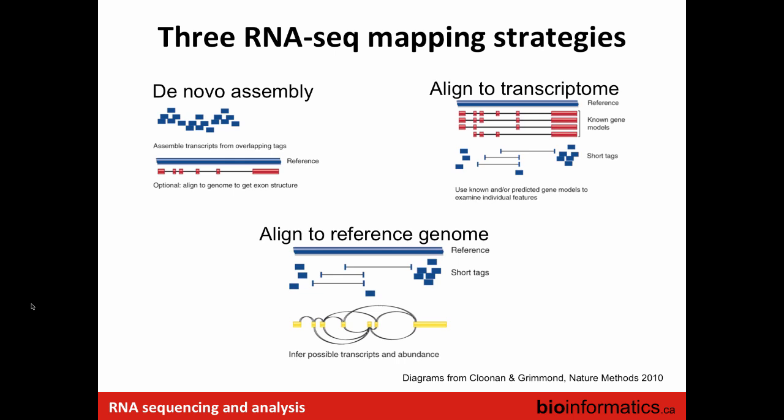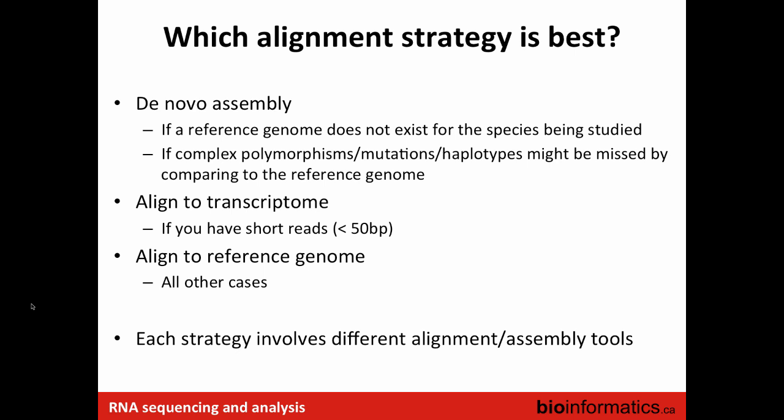When it comes to RNA-seq mapping tools, you can classify them into three different categories: de novo assembly tools, tools where you align to a transcriptome reference, and tools that align to a whole genome reference. The best strategy depends on what data you have and what you're trying to achieve. If you do not have a reference or your reference is not sequenced, you tend to do de novo assembly. You also tend to do de novo assembly if there is a lot of complexity or polymorphism in your dataset and you don't want to force it into a reference.